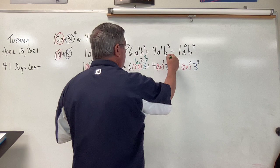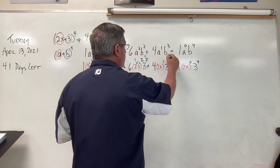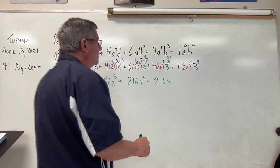well, this is just to the first, but 3 to the third is 27. So now we've got 27 times 4 times 2, and we get 216x.